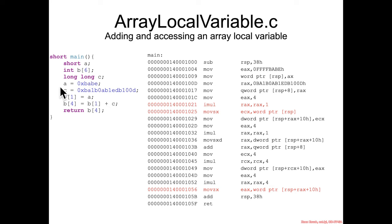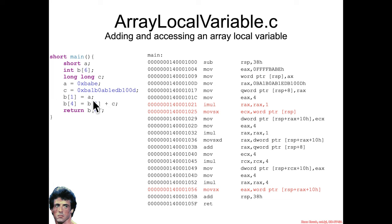We initialize some of these variables, and we go ahead and allocate them. We take A and stick it into B of one. We take B of one and add it to C, put it into B of four, and we return B of four as a short.